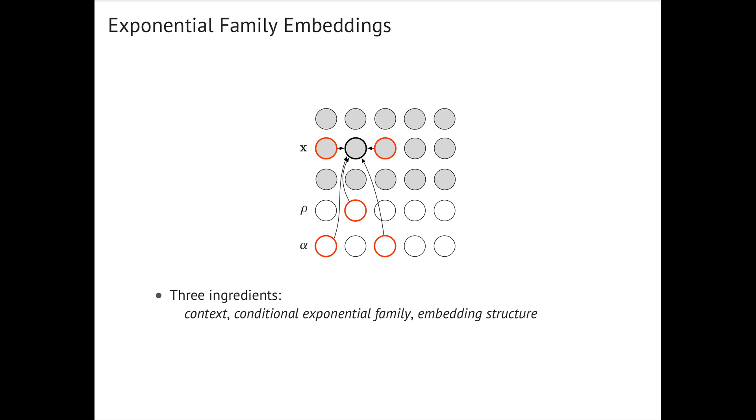Each type of embedding model defines the context, the exponential family of conditional distributions, and how the latent embedding vectors are shared across data.